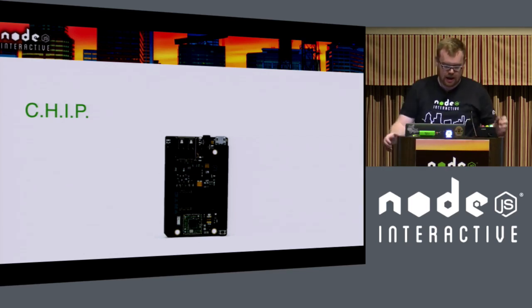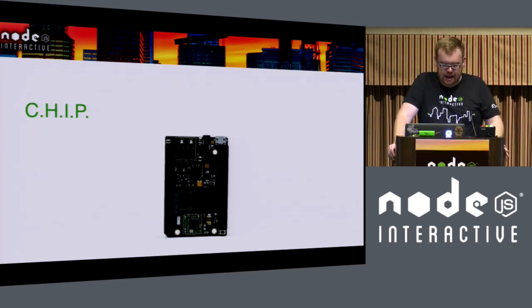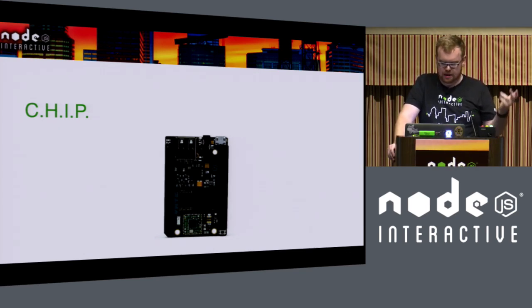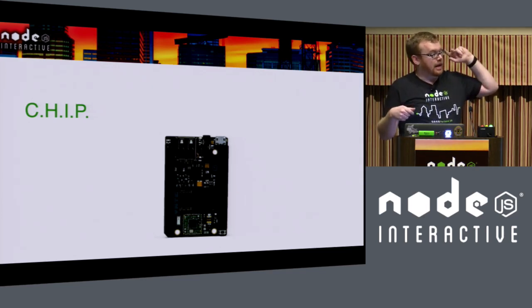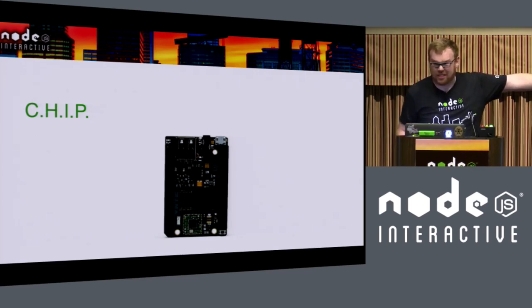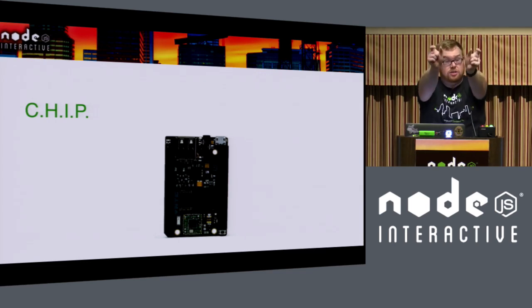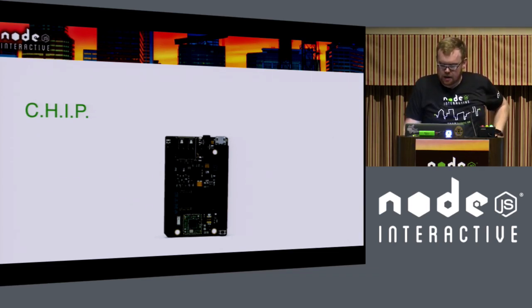Then there's the C.H.I.P. computer from an Indiegogo campaign. It's a nine-dollar computer coming out in June, so not released yet. It has about a gigahertz of CPU speed, 512 megabytes of RAM, and four gigabytes of built-in storage so you don't need an SD card. There's a Linux operating system on it and you can run full Node. It's got USB and audio out, and on the outer edge there are headers for plugging things in vertically.